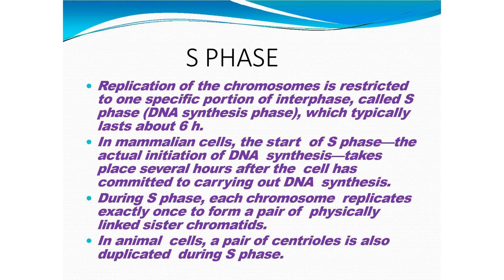S phase is also called the synthetic phase of the cell cycle. Replication of the chromosome is restricted to one specific portion of the interphase, called the S phase or DNA synthetic phase, which typically lasts about six hours. In mammalian cells, the start of S phase — the actual initiation of DNA synthesis — takes place several hours after the cell has committed to carrying out DNA synthesis. During S phase, each chromosome replicates exactly once to form a pair of physically linked sister chromatids. In animal cells, a pair of centrioles is also duplicated during S phase.